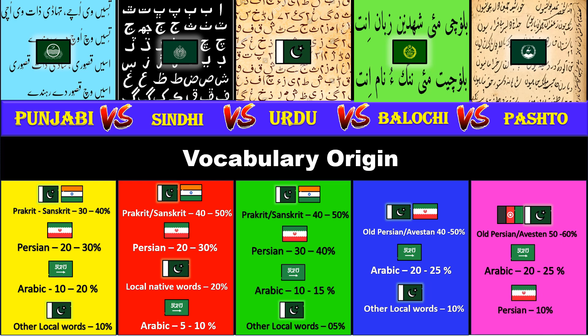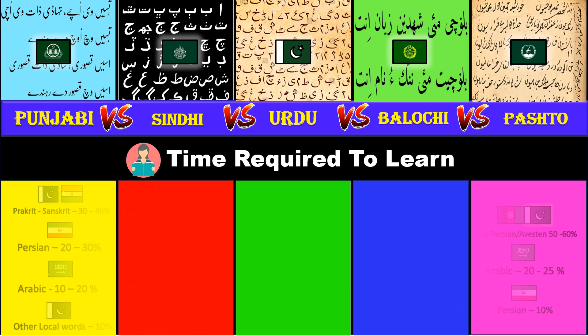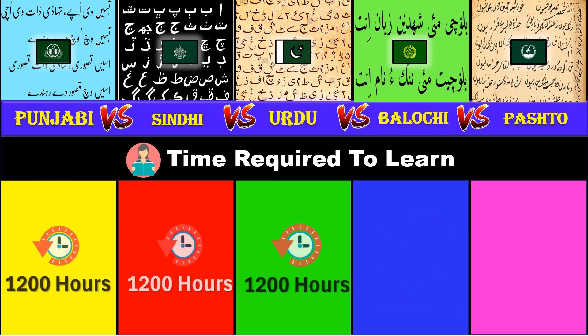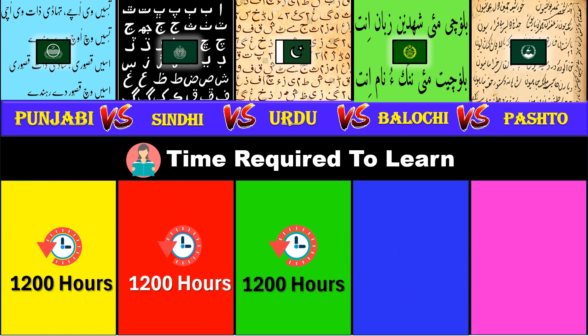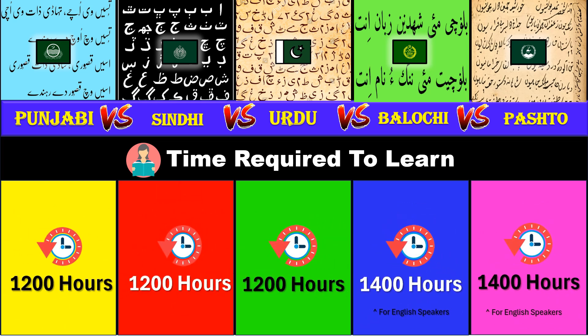Time required to learn. For Punjabi, Sindhi and Urdu it's 1,200 hours, while for Balochi and Pashto it's 1,400 hours.